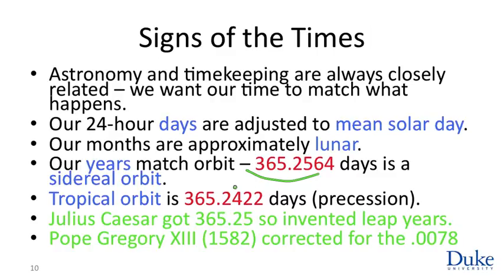Correcting for the deviation between 0.2422 and 0.25 required removing some leap years. That is why on centuries that are not millennia — years whose number divides 100 but not 1000 — we do not add a leap year; February has no 29th day and those years are only 365 days long. The average year is now close enough to 365.2422 days that it will be a millennium before another correction is needed.